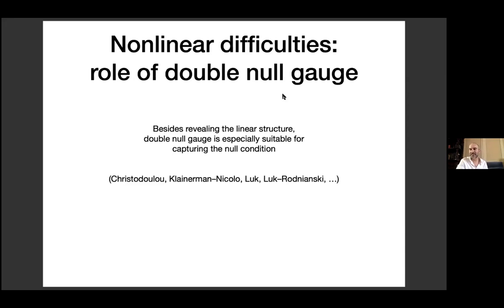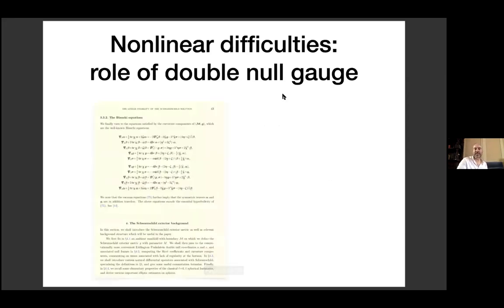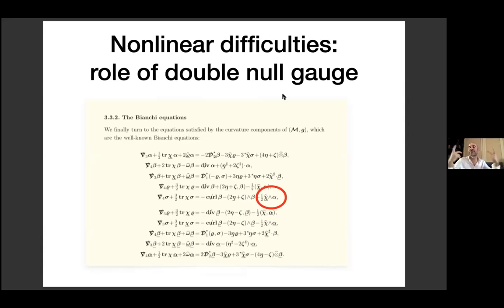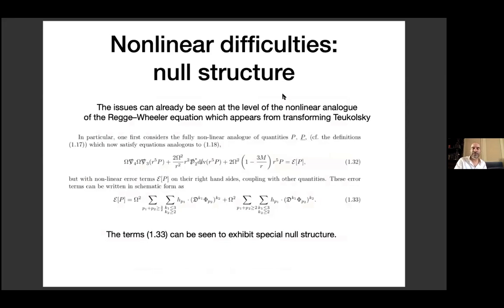Double null gauge is tailor-made for easily dealing with all the nonlinear issues related to quadratic terms. For example, here are the Bianchi equations — part of the double null gauge system — and here is a random nonlinear term that disappears when you linearize: a geometric product between curvature and a shear. Because of its geometric nature, this term has much better decay properties than a generic quadratic expression you could write down. This is key and you see it immediately in this formulation.